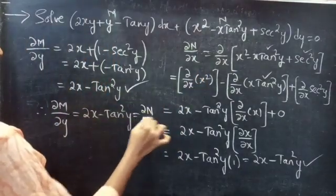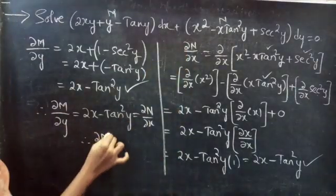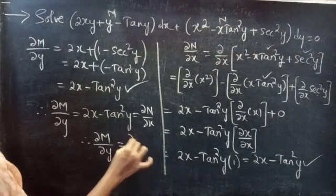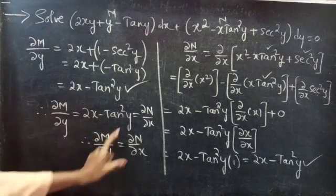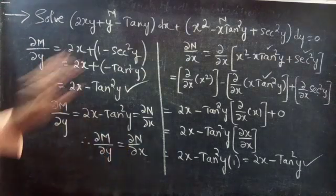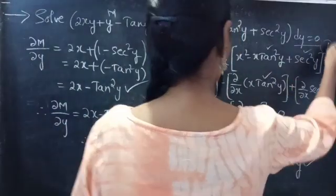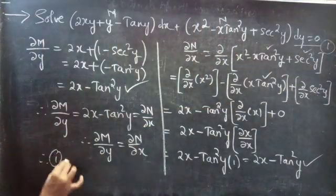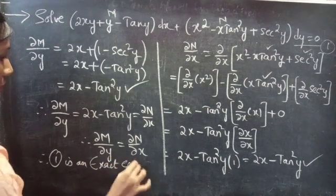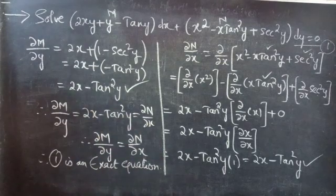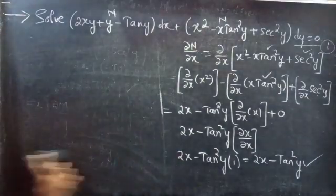Therefore ∂M/∂y = 2x − tan²y = ∂N/∂x. Since ∂M/∂y equals ∂N/∂x, we can say that the given differential equation is an exact equation. Consider equation 1 — therefore equation 1 is an exact equation. Now we can find the general solution.